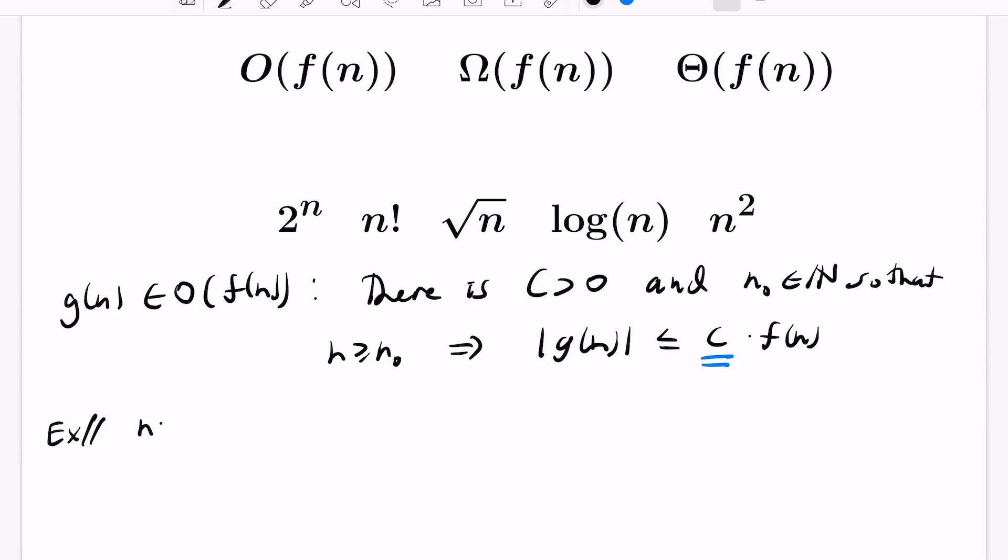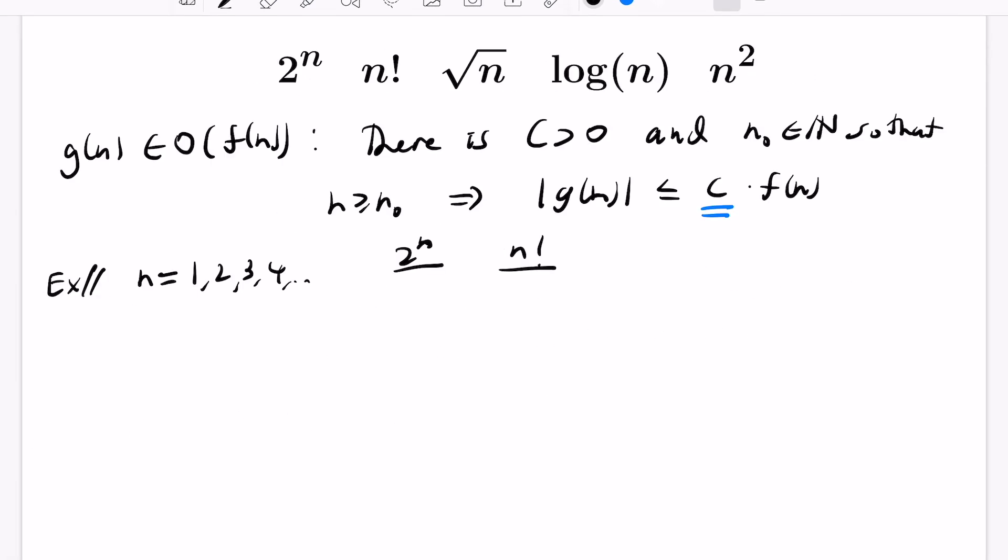So let's actually see this by looking at values of n and comparing 2 to the n and n factorial. When n is 1, we get 2 and 1. And when n is 2, we get 4 and 2 and then 8 and 6 and then 16 and 24. We can kind of see that after this point, n factorial will actually be strictly larger than 2 to the n.